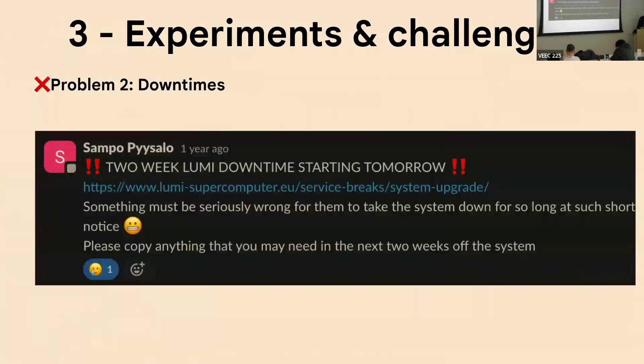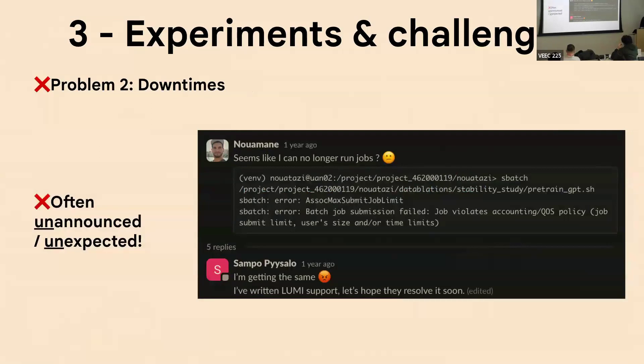And the next big problem was downtimes. We had massive downtimes of multiple weeks. Often they would be unannounced or completely unexpected. So it's important to mention here that the Lumi cluster, it was the first year of operation. So we were essentially the first project on this cluster. The advantage was we had the entire cluster for us and we could scale up to like 2,200 nodes. But the problem was suddenly none of them would work or the cluster would be down for multiple weeks. And it was very difficult to deal with at times.